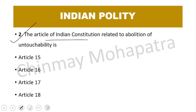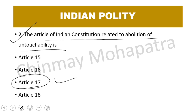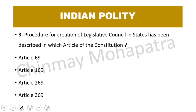Question number 2: The article of the Indian constitution related to the abolition of untouchability is — the right answer is Article 17. This article is directly related to untouchability.